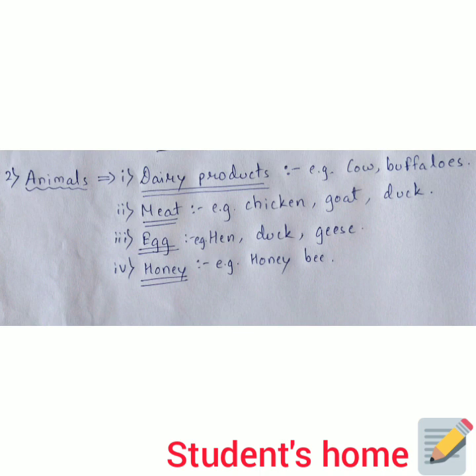Point number two is meat. We get meat from chicken, goat, and duck. Meat is a very valuable source of protein for humans — it gives us a lot of protein, which is why we include meat in our diet.